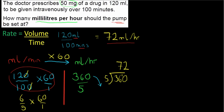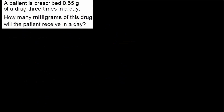Question two: a patient is prescribed 0.55 grams of a drug three times a day. How many milligrams of this drug will the patient receive in a day? This is a two-part question. First, note the word 'times' — one step will be to multiply by 3. Then there's a second step: the answer is needed in milligrams, but the units in the question are grams, so we'll need to convert.